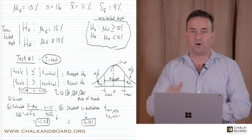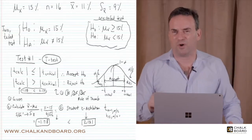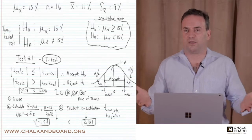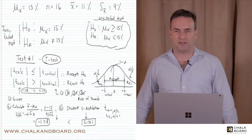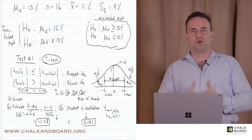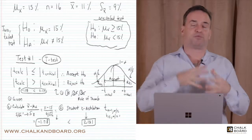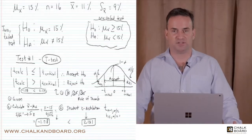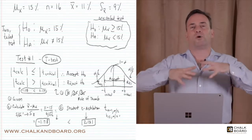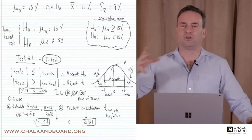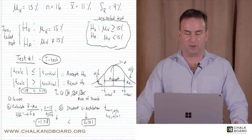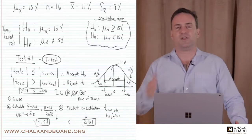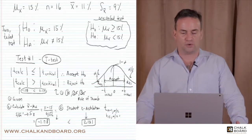There are two ways to get the critical t-value: an approximation or rule of thumb based on the confidence interval — in this case two standard deviations from the mean — or a more precise number by looking it up on the student t-table. On the exam, if they give you the student t-table, look it up. If not, use the rule of thumb.